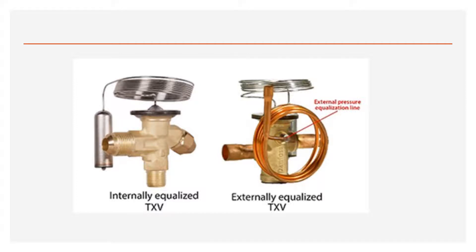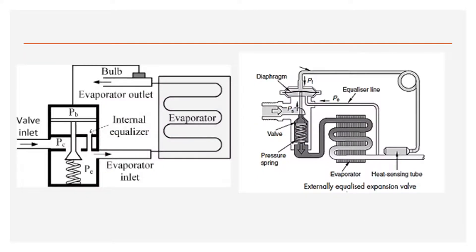An internally equalized TXV uses evaporator inlet pressure to create a closing force on the valve. An externally equalized TXV uses the evaporator outlet pressure, thereby compensating for any pressure drop through the evaporator.